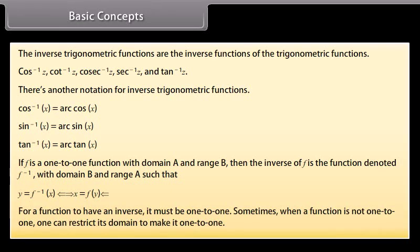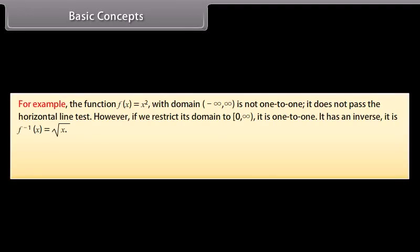The inverse satisfies: y = f⁻¹(x) if and only if x = f(y). For a function to have an inverse it must be one-to-one. Sometimes when a function is not one-to-one, one can restrict its domain to make it one-to-one. For example, f(x) = x² with domain (−∞, ∞) is not one-to-one, but if we restrict its domain to [0, ∞), it is one-to-one and its inverse is f⁻¹(x) = √x.